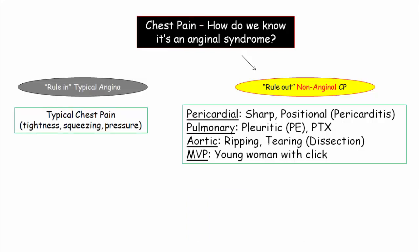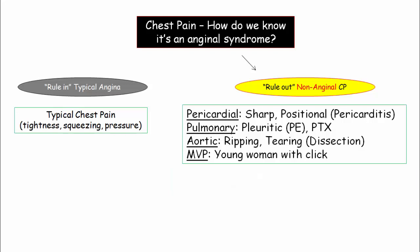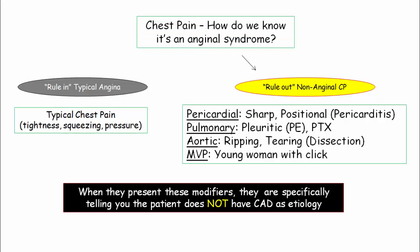Other chest pain vignettes likely to be encountered include aortic dissection, described by a ripping or tearing sensation with asymmetric pulses frequently present; and mitral valve prolapse, where although a click should be described, patients may only be noted as young with associated palpitations. The chest pain of mitral valve prolapse is simply an association — they are not mechanistically related. These chest pain syndromes are very distinct from angina. When modifiers like pleuritic chest pain are present, the NBME is specifically telling you the patient does not have coronary artery disease as the etiology.